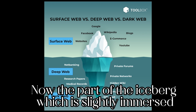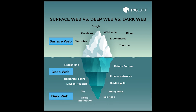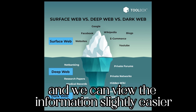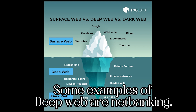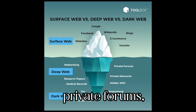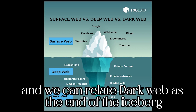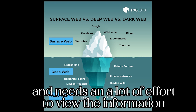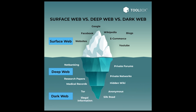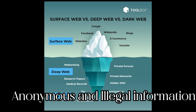The part of the iceberg which is slightly immersed is related to the deep web — it is slightly immersed and we can view the information slightly easier. Some examples of deep web are net banking, private forums, and hidden wiki. We can relate the dark web as the end of the iceberg, which is highly immersed and needs a lot of effort to view the information. Dark web includes Tor, anonymous and illegal information.